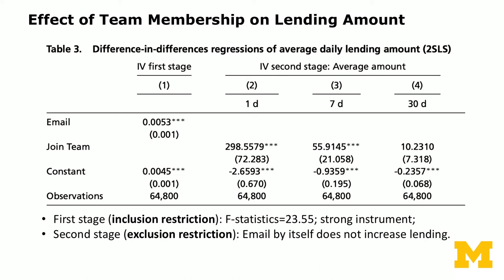We also test the inclusion restriction — whether the instrument actually correlates with the endogenous variable of joining teams. You test this using the F-statistic. In this case, it is highly significant: the F-statistic is 23.55, which means it is a strong instrument.